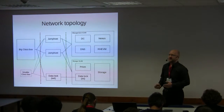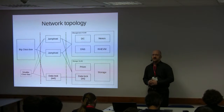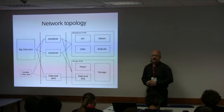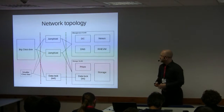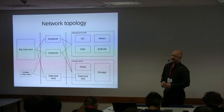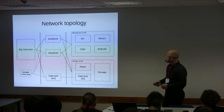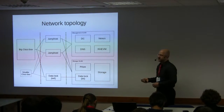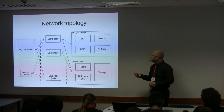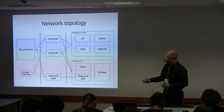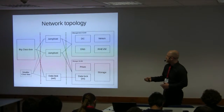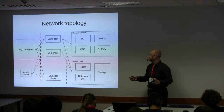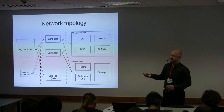Our DNS space is also exposed to the world — we made a judgment call that it makes our lives much easier and the risk is not that high, so we chose to do that. REVM is the Red Hat Enterprise Virtualization Management Node. The jump hosts and the external data lock are physical machines; most other machines are virtual and run on Red Hat Enterprise Virtualization on a Dell Blade server. The management node is a separate physical blade — we don't want the management node to be a virtual machine.